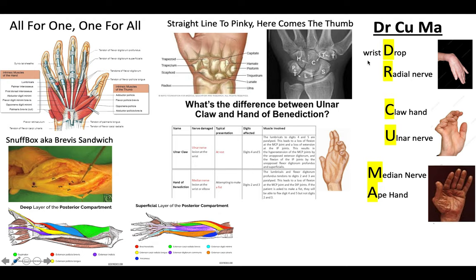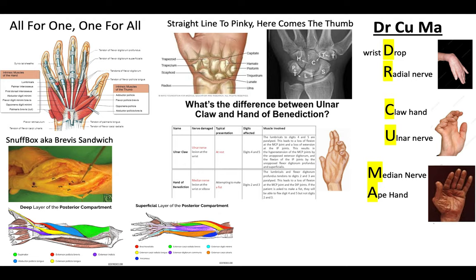This is a very important mnemonic for the different nerve palsies that can present in the hand. The mnemonic is 'Dr. Kuma.' The 'D' for Doctor is significant for wrist drop, which is usually associated with the radial nerve — commonly seen with a fracture of the neck of the humerus. The next is claw hand, for the 'Ku,' which I remember as 'clue hand' to keep straight that it is the ulnar nerve creating this pathology. And finally, for the 'Ma,' the median nerve presents with ape hand.